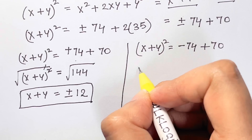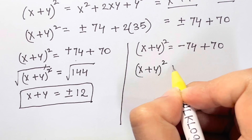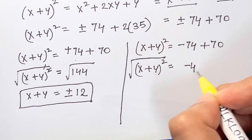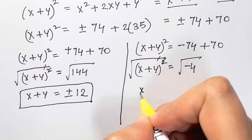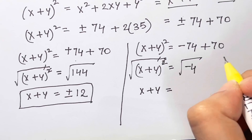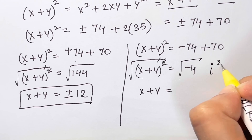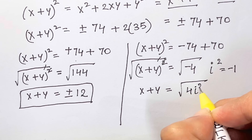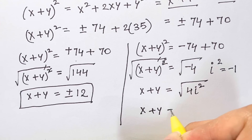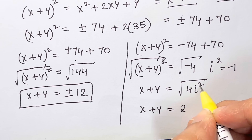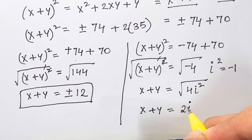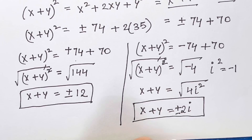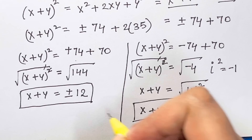For the second case, (x+y)² = -4. Taking the square root, since i² = -1, we write √(-4) = √(4i²) = ±2i. So x + y = ±2i. Our four solutions are: x + y = +12, -12, +2i, and -2i.